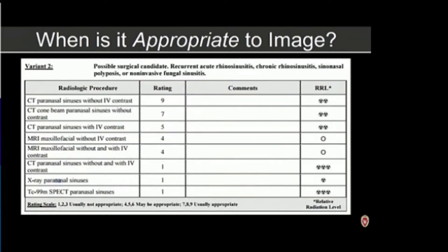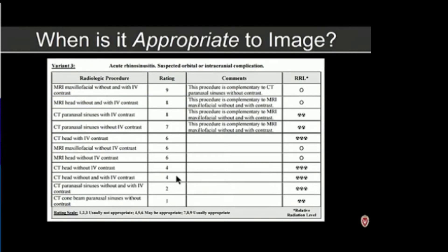Imaging is really appropriate in situations where patients have chronic sinus inflammation or multiple bouts of acute inflammation. In that case, we're looking for an anatomic explanation for recurrent symptoms, and our workhorse is a CT scan without contrast. However, if somebody presents with acute symptoms but it's a complicated situation — concern for intraorbital or intracranial extension — then it is appropriate to image acutely, using MR with and without contrast, and potentially CT with contrast to look for extension of disease beyond the sinus margins.